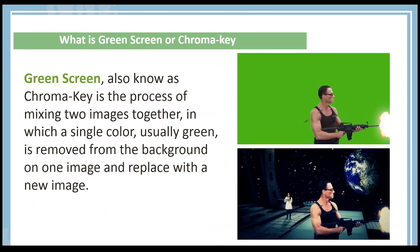Green screen, also known as chroma key, is the process of mixing two images together in which a single color — usually green — is removed from the background of one image and replaced with a new image. For example, Jean-Claude Van Damme was shot on green, and then we removed the green and replaced it with our own background. It can have multiple parts — not just one image, but many different images.